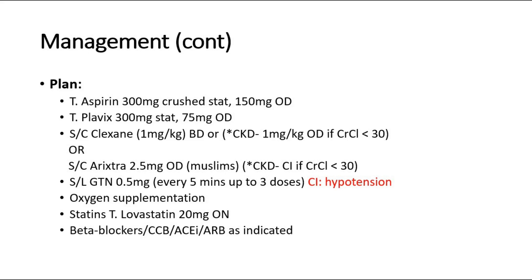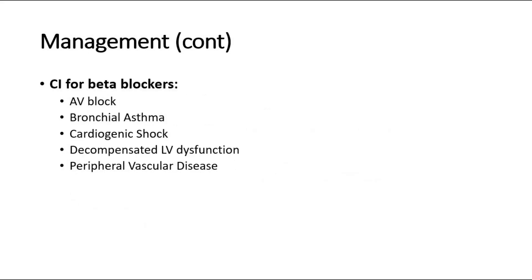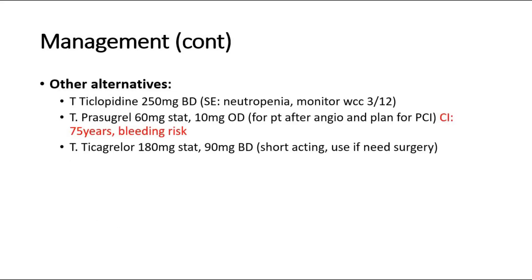Take note of these contraindications of beta blockers: AV block, bronchial asthma, cardiogenic shock, decompensated LV dysfunction, and peripheral vascular disease. Other alternative drugs are ticlopidine, prasugrel, and ticagrelor.